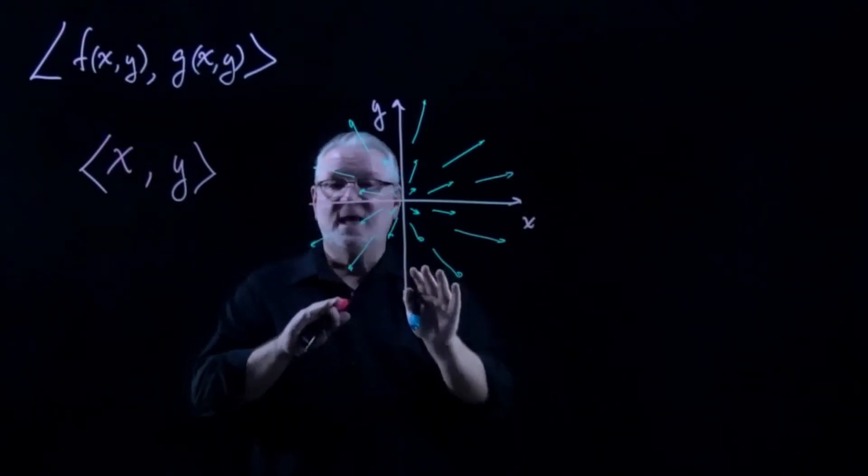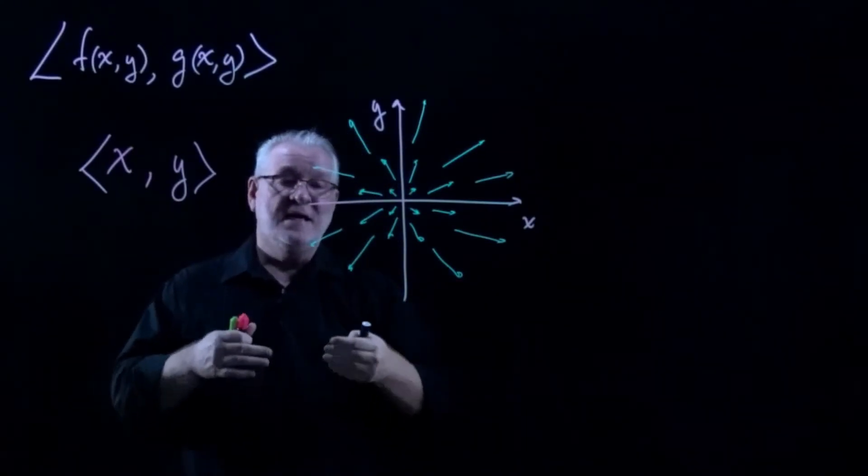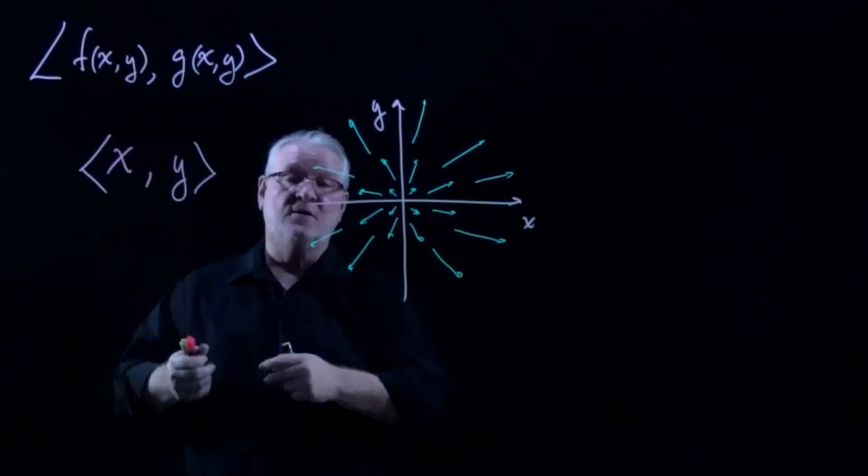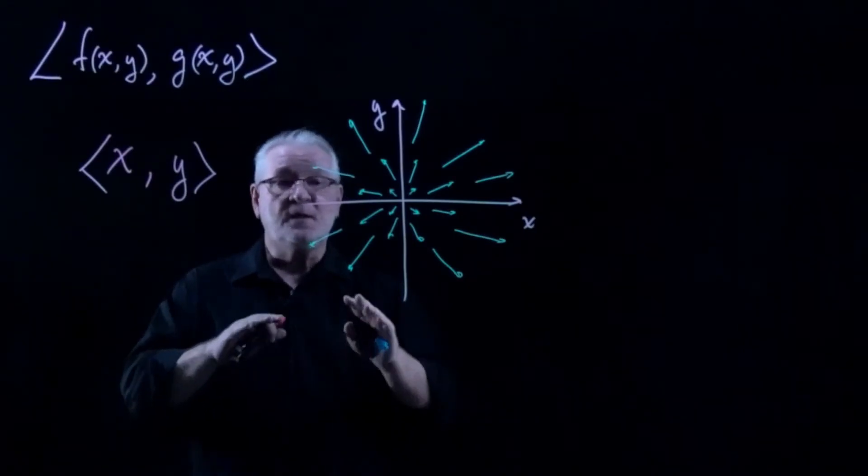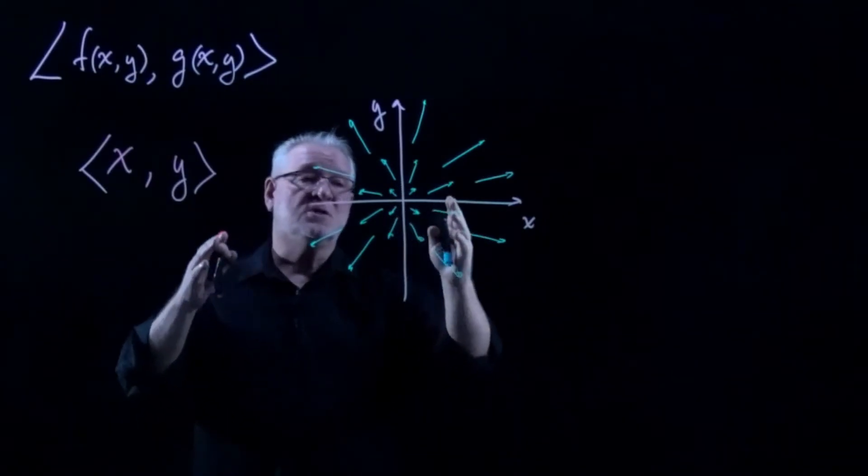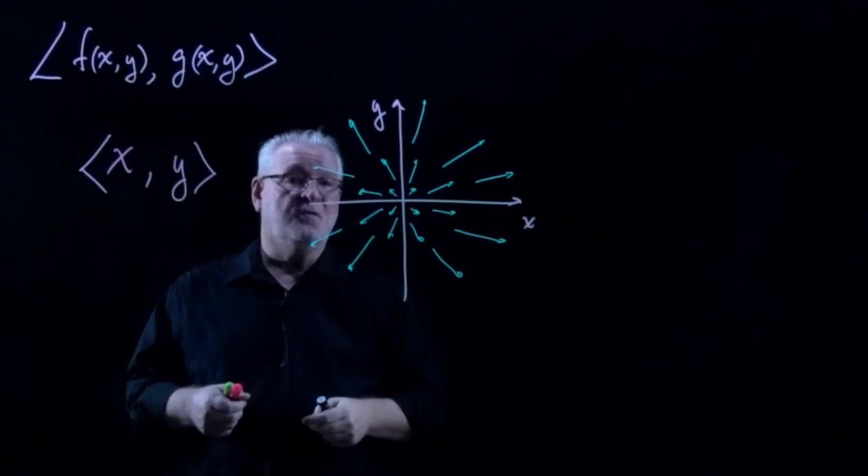And generally, a sketch of a vector field is intended to be just that, a sense of how this force field operates, if in fact it represents forces. This could also represent temperatures, where the temperature was very cold at the center, and reaches larger and larger magnitudes as we move outward.